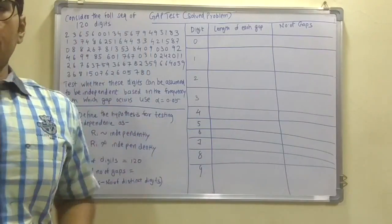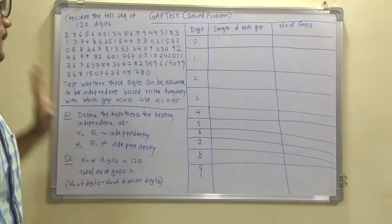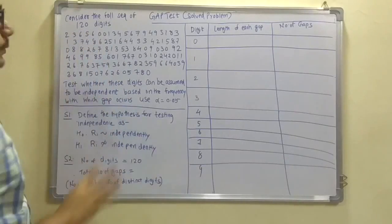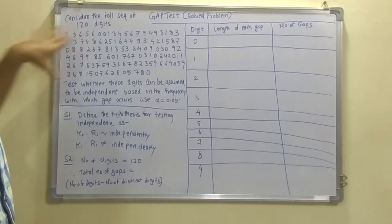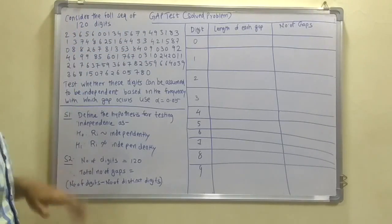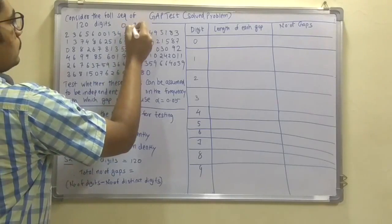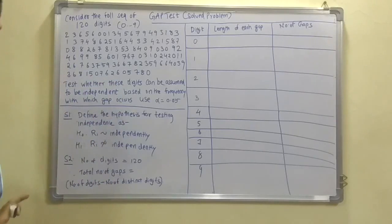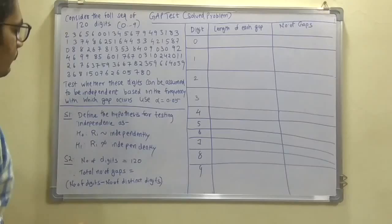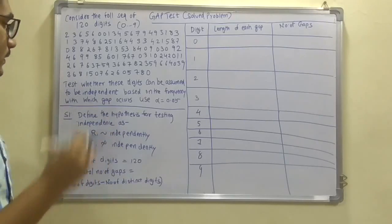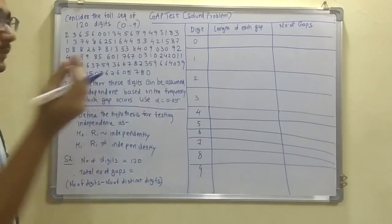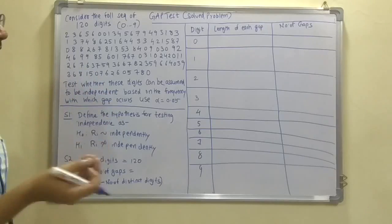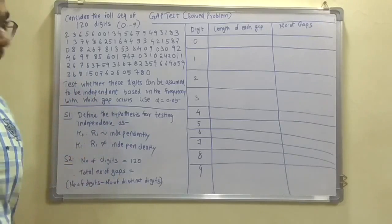So finally we solve the problem on the gap test. First of all, there are 120 digits in the following sequence: 2, 3, 6, 5, 6, and so on — 120 digits total in the domain 0 to 9. All these digits are in the range 0 to 9, giving us 10 distinct digits. We have to test whether these digits can be assumed to be independent based on the frequency with which gaps occur, using alpha = 0.05.